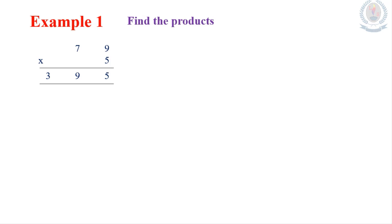Second example: 86 multiplied by 4. Multiply the 1's place first: 4 times 6 is 24. Write 4 in the 1's place and carry 2 tens to the 10's place. Multiply the 10's place: 4 times 8 is 32, plus the 2 carried gives 34. Write 4 in the 10's place and 3 in the 100's place. Answer: 344.